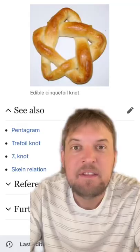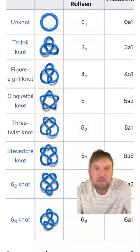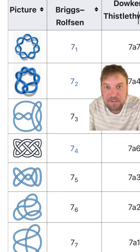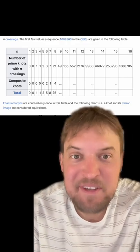This figure eight knot is the only prime with four crossings. There are two unique five crossing knots: the cinquefoil knot and the three twist knot. There are three prime knots with six crossings, and seven with seven crossings. And the numbers get crazy, like there's 165 known knots with ten crossings.